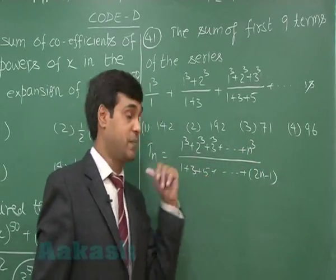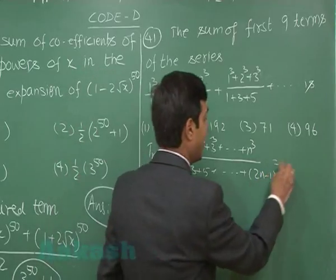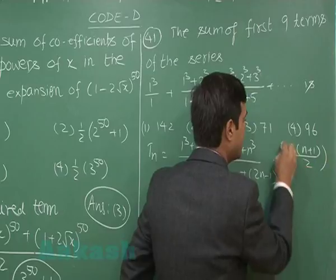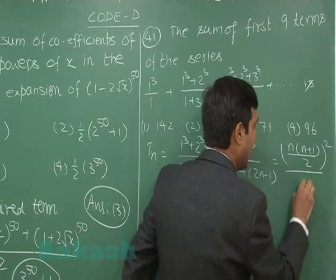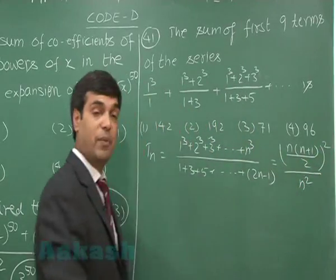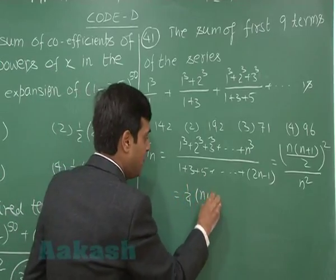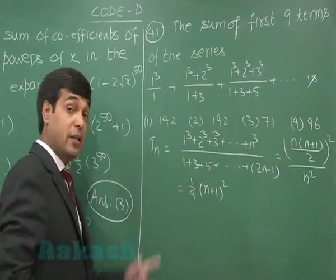So we simply have the result as [n(n+1)/2]² for numerator and n² for denominator, correct? So it is (1/4)(n+1)².